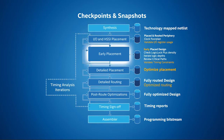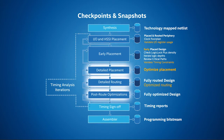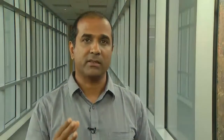After I/O placement, next comes the early placement stage. In addition to checking early timing, you can check LogicLock Plus density, iterate towards appropriate logic depths, and review critical paths. Detailed placement and routing offer additional optimization steps. The basic idea here is to create a smoother convergence to timing closure, which naturally reduces the number of time-consuming full design iterations.